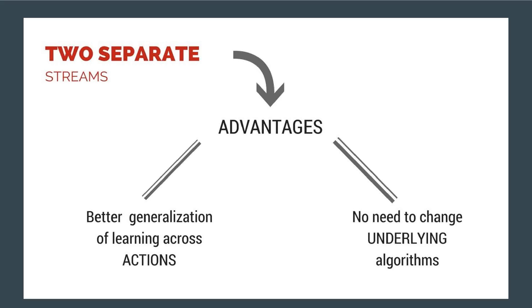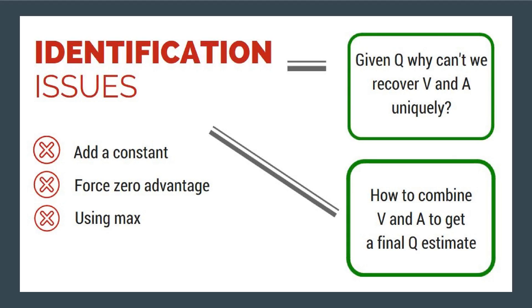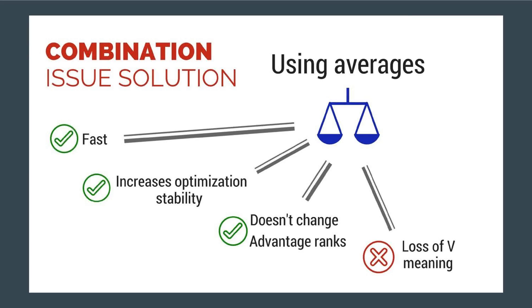Without having to change the underlying algorithms, it is tempting to write Q = V + A. However, we cannot identify V and A in a unique way from this equation — adding a constant to V and subtracting it from A does not give good performance. Forcing the advantage to zero for a chosen action is not useful either. Using the max value gives similar results, but if the max operand is replaced by a mean, the model gains stability even if the original meanings of V and A are lost due to displacement. Subtracting the mean helps with identifiability, does not change how the advantages are ordered, and preserves any policy based on Q values. It is enough to evaluate the advantage stream to make decisions.